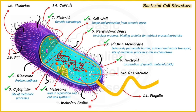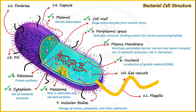Inclusion bodies represent an aggregation of organic and inorganic materials and are generally called storage reserves for carbon, phosphate, and other substances. For example, polyhydroxybutyrate is found as a carbon reserve, and polyphosphate is a good example of a phosphate reserve. Inclusion bodies are generally found in granular or crystal form. They also include micro-compartments such as gas vacuoles, which help bacteria float in aquatic environments.